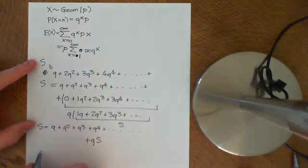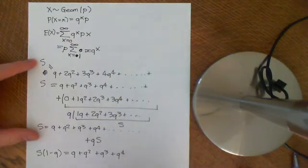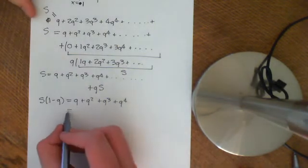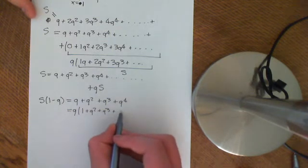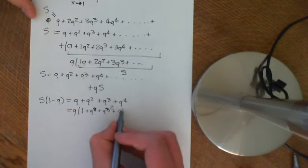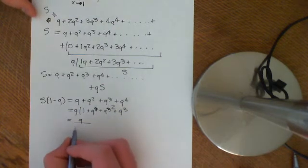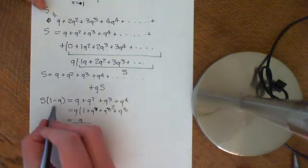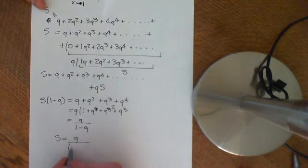Therefore, subtracting, we get S times 1 minus q is equal to q plus q squared plus q cubed plus q to the 4 and so on. This is just the geometric series — if we factor out q, then we have q times 1 plus q squared plus q cubed etc., and we know that sum equals 1 over 1 minus q. So S times 1 minus q is q divided by 1 minus q, therefore S equals q over 1 minus q squared.